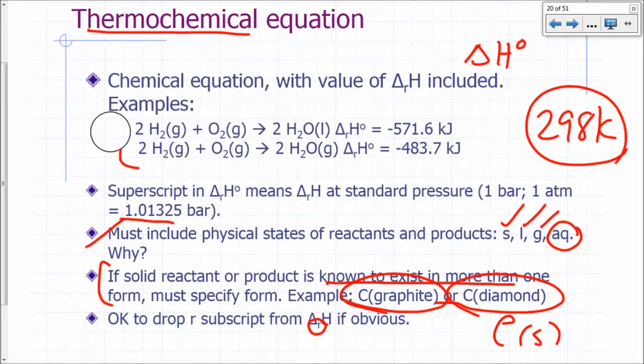Now, oftentimes you'll see this subscript R dropped from a thermochemical equation. So you might see this thermochemical equation without that R down there, and that's okay because it's attached to a chemical or thermochemical equation. It's obvious that that delta H refers to that particular reaction.